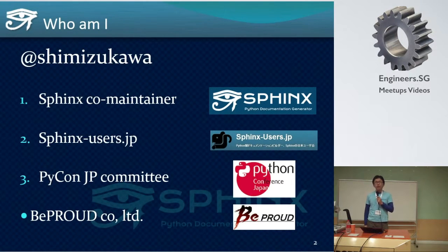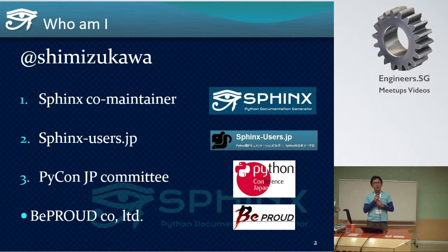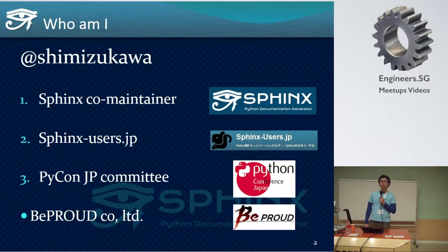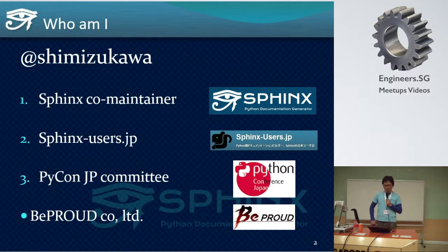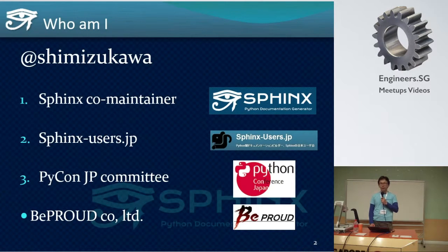Let me introduce myself. My name is Takayuki Shimizukawa, from Japan. I do three open source works: one is Sphinx co-maintainer since the end of 2011, and I organized the Sphinx user group in Japan — it's a regional user group. And third, I'm a member of the IconJP committee. I'm working for B-plus company, where we develop web applications for business customers using Django and Pyramid.